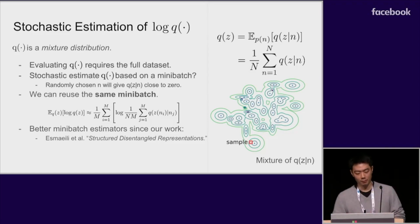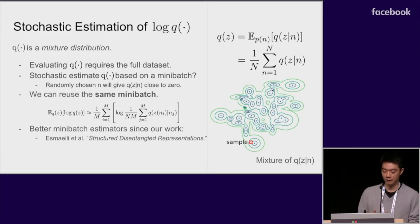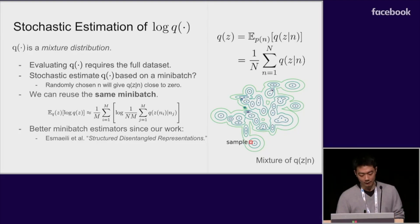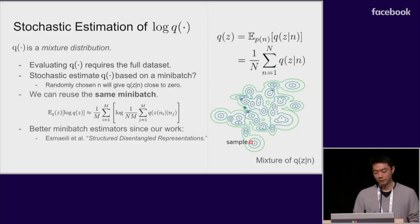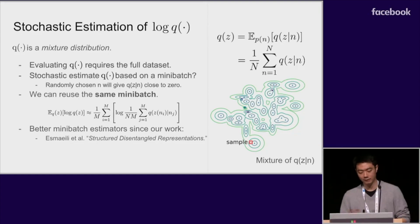To do this, inspired by importance sampling, we used a weighted average computed from the same mini batch to obtain an estimate for log q. Note that a very similar estimator can be constructed for the one-dimensional marginals of q as well. This estimator ultimately is biased, but we find that it still works well in practice. We know that some follow-up works have created slightly better estimators, which may work even better. During evaluation we can use the full dataset to exactly compute log q. So this estimator is used only during training.